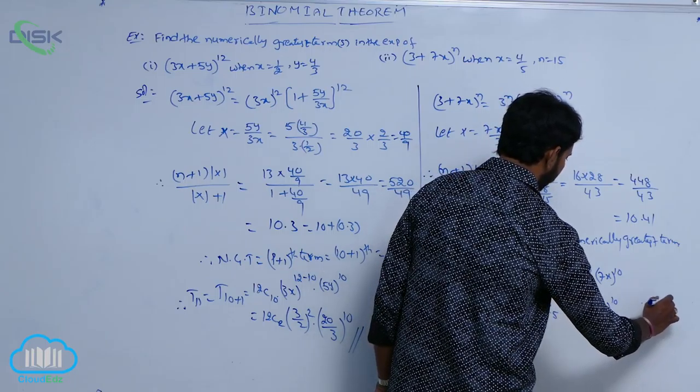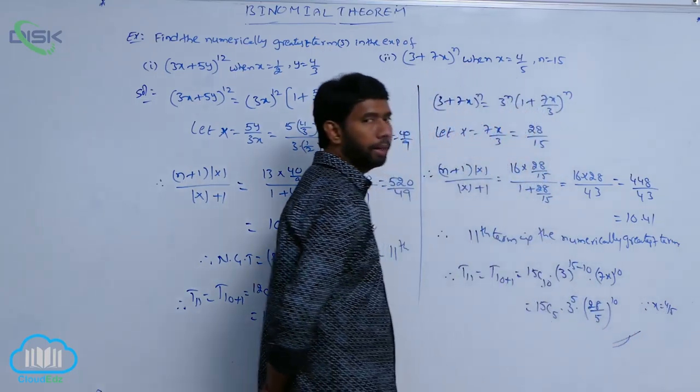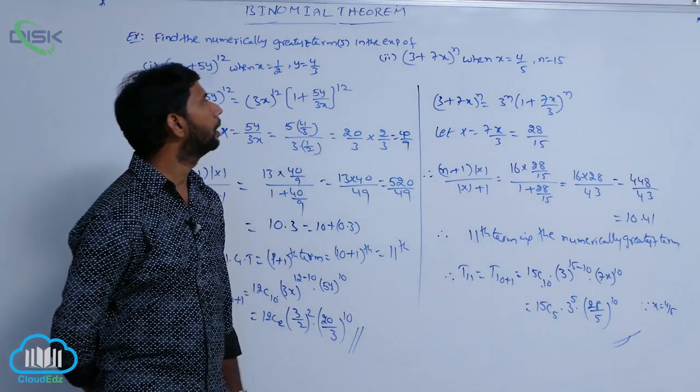Since x is equal to 4 by 5 is the numerically greatest term in the expansion of 3 plus 7x whole power N.